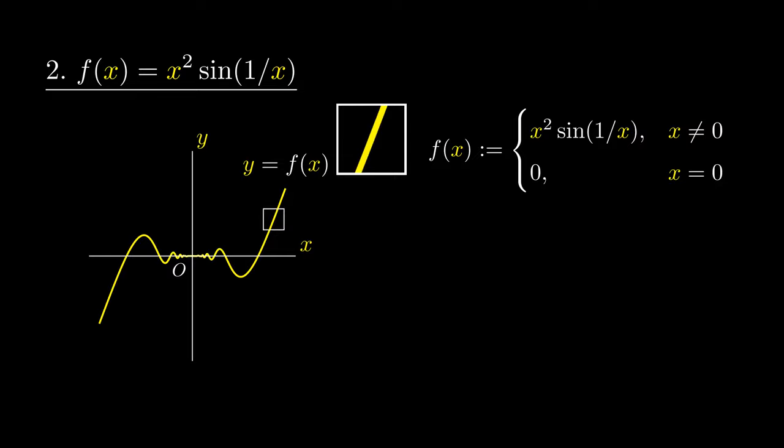When we zoom in on each point on the graph, we are essentially getting a straight line every time. This means that the function is differentiable at non-zero inputs.